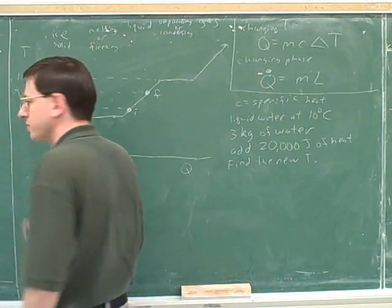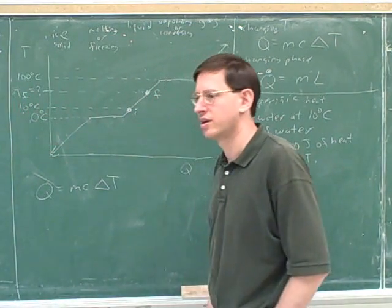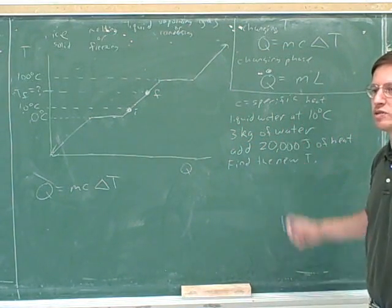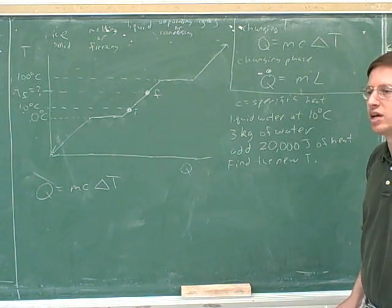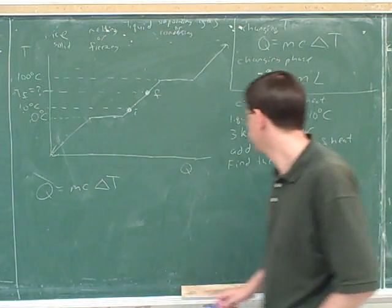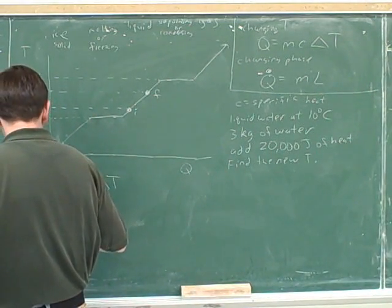Let's see. What should we plug in for Q? Yeah, positive or negative. Because we're adding heat. When you add heat, Q is positive. When you remove heat, Q is negative. I didn't actually say that before, but adding heat, Q is positive. Removing heat, Q is negative.